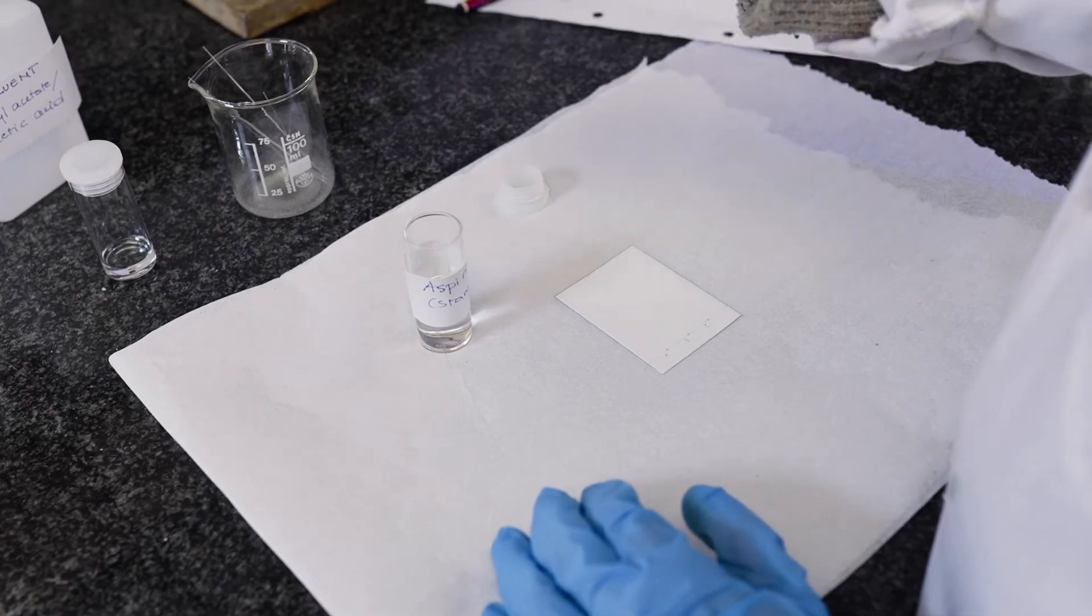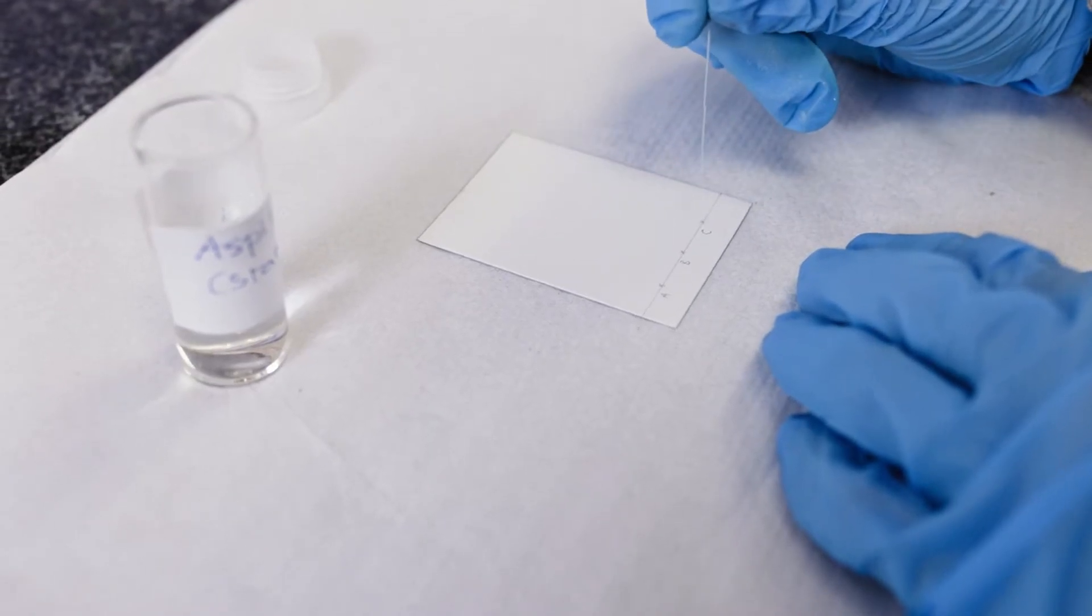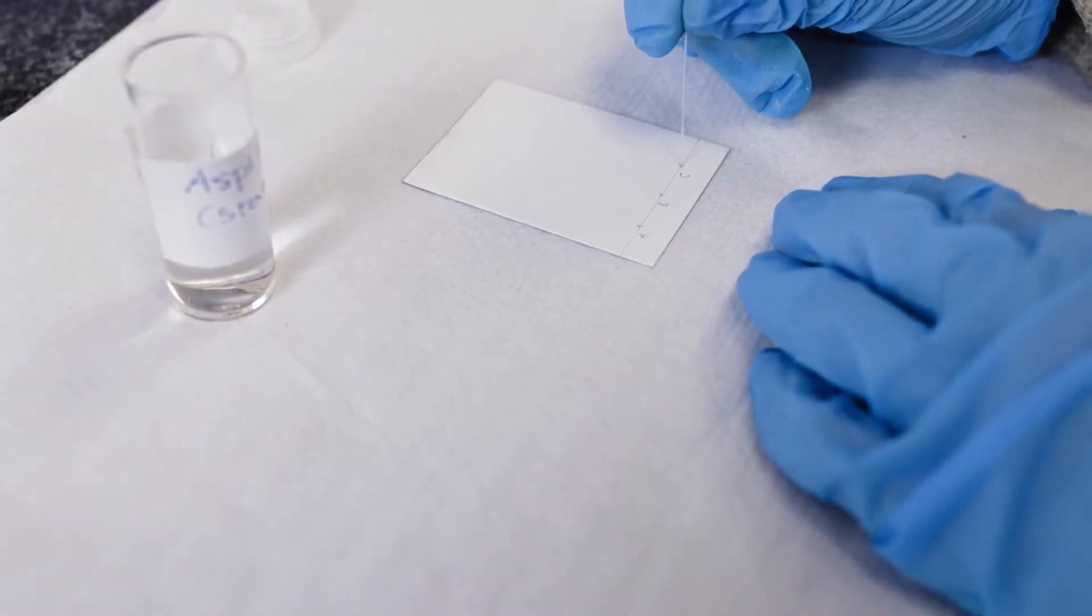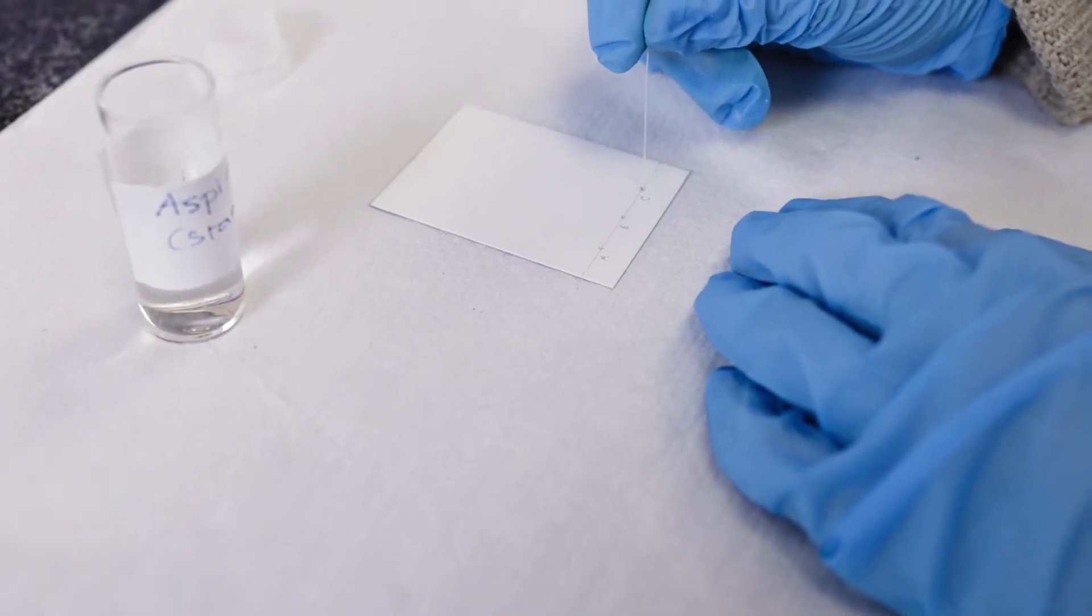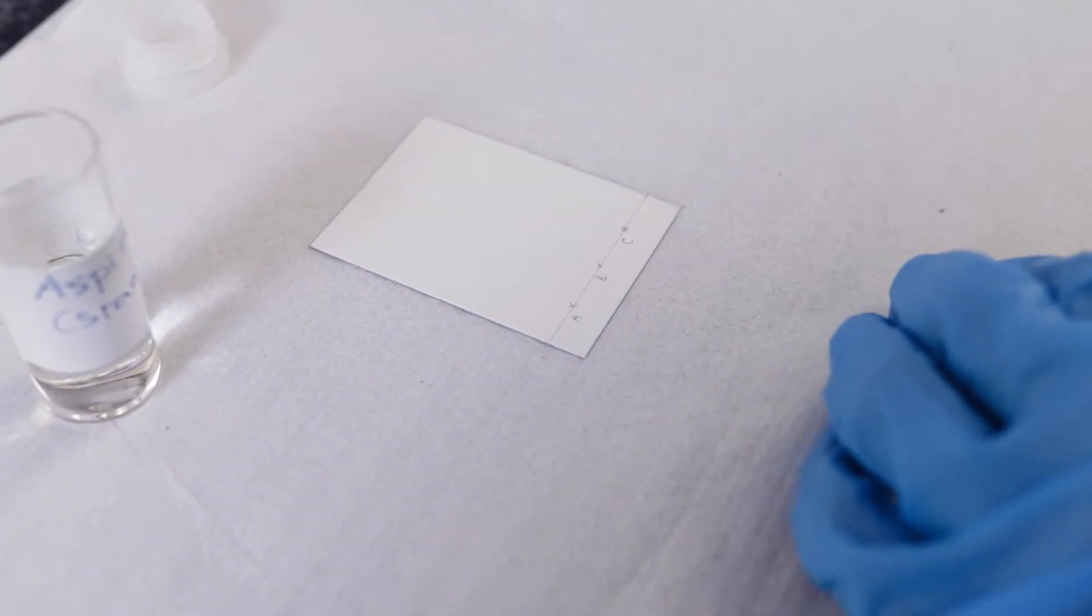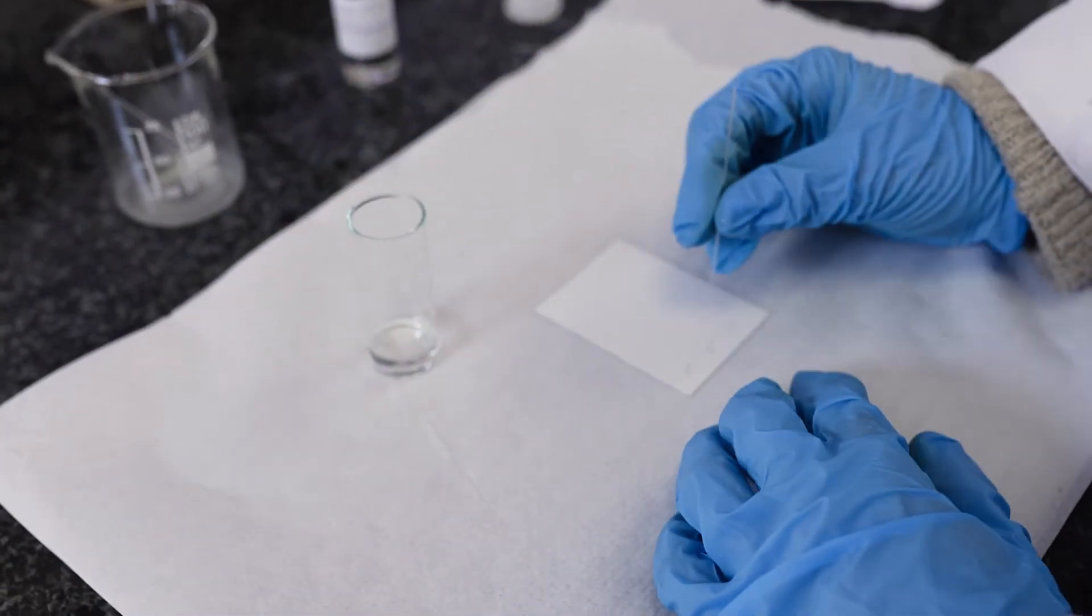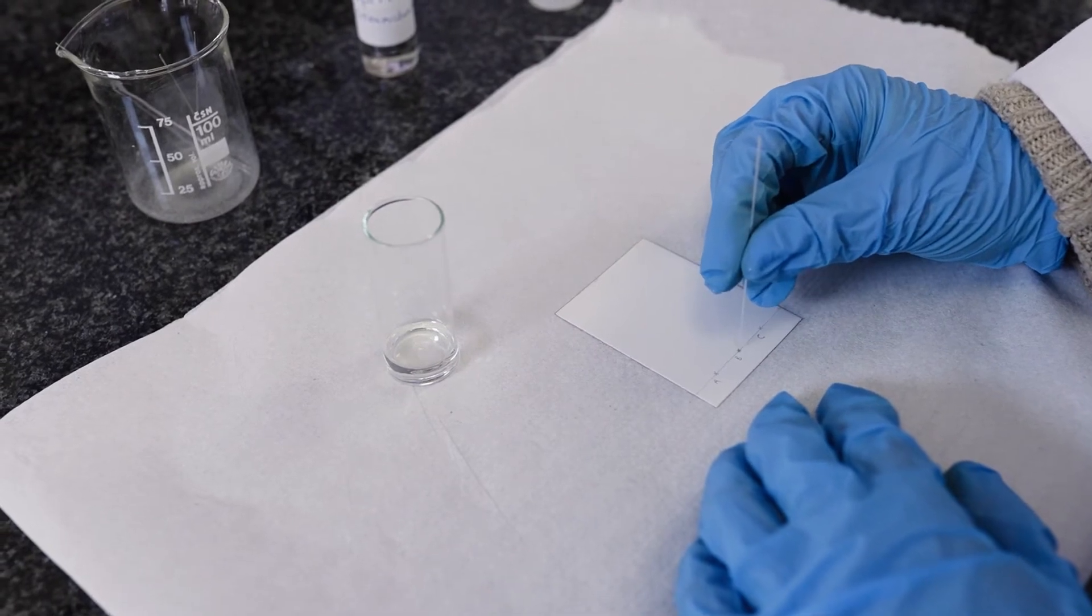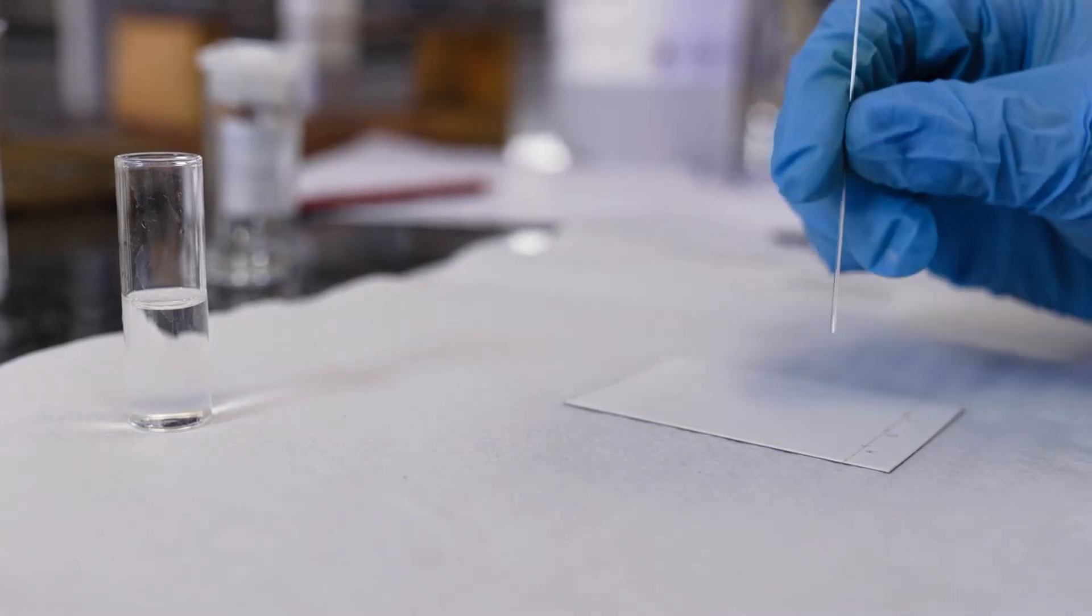So we just dip it into our solution and then we need to make sure that the capillary tube is upright when we spot it. So you'll see there's a little dot that forms, and we're going to do that twice to make sure we've got enough solution on our TLC plate. So now we're doing our homemade aspirin, and this is salicylic acid.